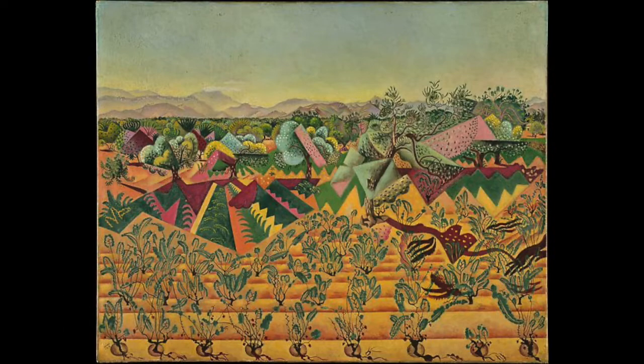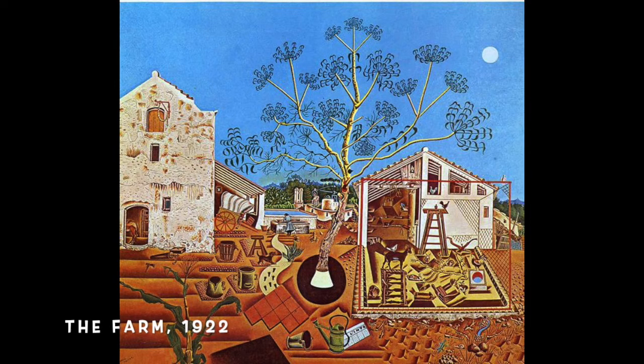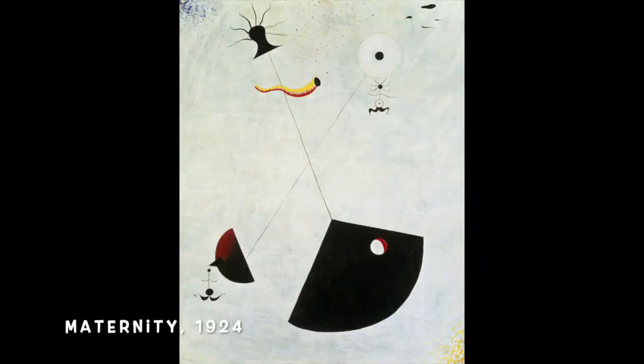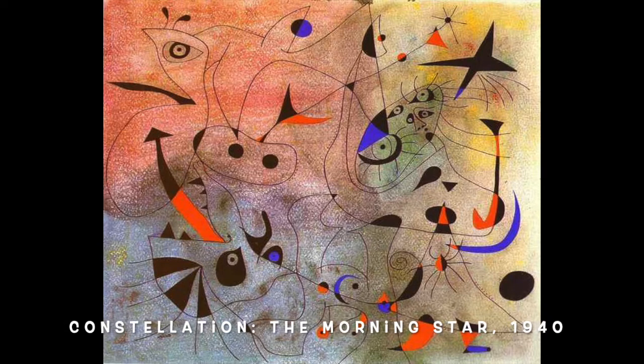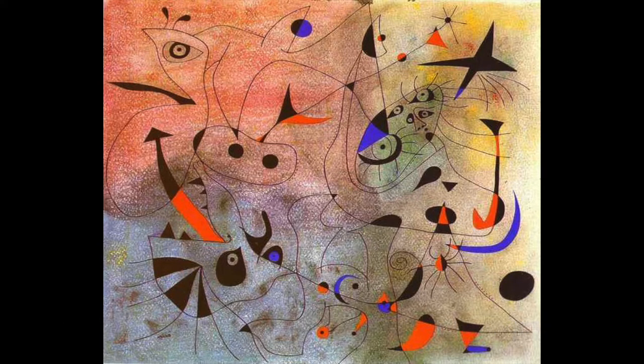His early art was more realistic, but as he grew older he began experimenting with shapes, lines, and colors. Some of the shapes are recognizable, but a lot of it just looks like doodles.